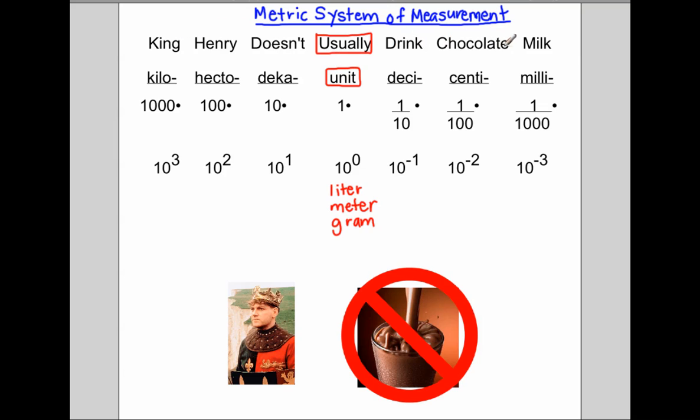And once you memorize this, you're basically set. King Henry doesn't usually drink chocolate milk. One more time. King Henry doesn't usually drink chocolate milk. That's King Henry. He doesn't usually drink chocolate milk. So that's one way to remember it.